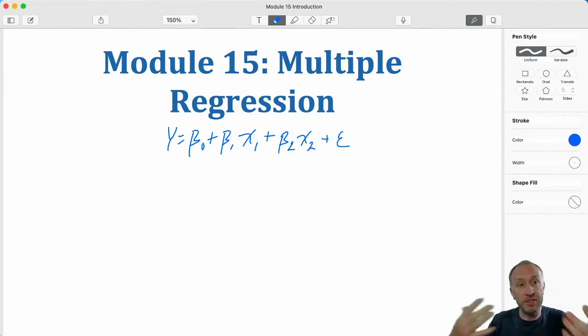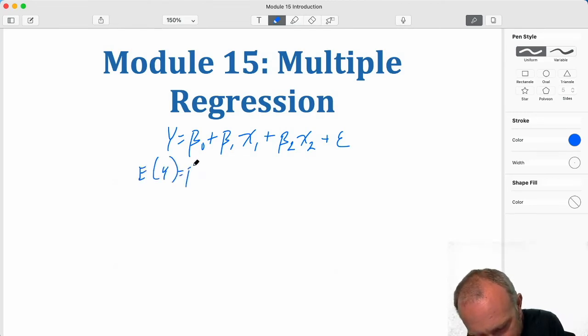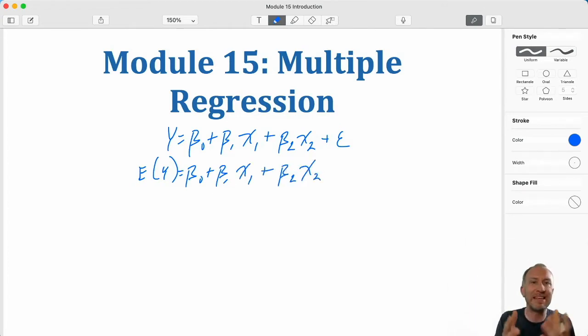So the approach is going to be very similar. This is that regression model. When we take the expected value we obtain our regression equation. And so you can see here the epsilon term has to have that mean value of zero so that when we take the expected value it disappears.